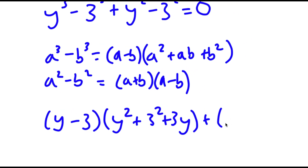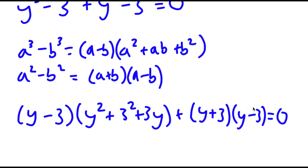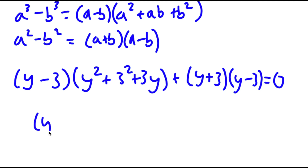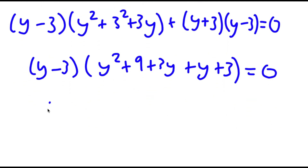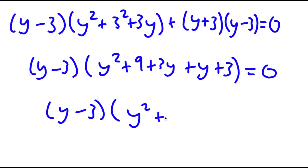I can rewrite y squared minus 3 squared as y plus 3 times y minus 3, and this is equal to 0. Now if I factor out y minus 3, I get y minus 3 times y squared plus 9 plus 3y plus y plus 3, which is equal to 0. And this simplifies into y minus 3 times y squared plus 4y plus 12 is equal to 0.